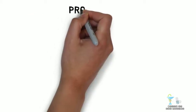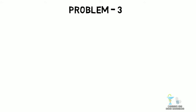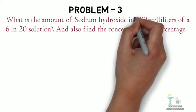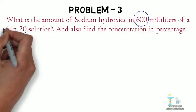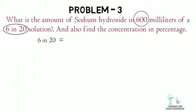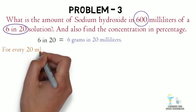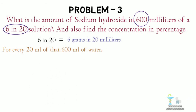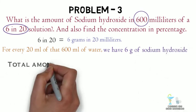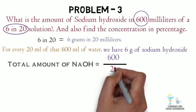The final problem: what is the amount of sodium hydroxide in 600 milliliters of a 6-in-20 solution, and also find the concentration in percentage? We have 600 milliliters of solution. The clue '6 in 20' refers to 6 grams in 20 milliliters, meaning for every 20 milliliters of that 600 milliliters we have 6 grams of sodium hydroxide. Dividing 600 by 20, we get 30 grams of sodium hydroxide.